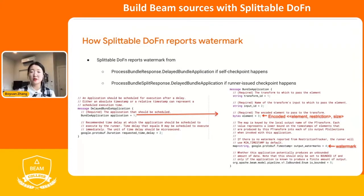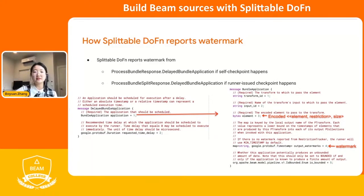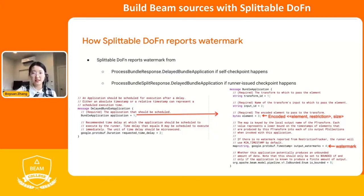After we report the watermark with the watermark estimator, how can the runner get the information? We report the watermark back in two ways. First, when self-checkpoint happens, we report the watermark together with the process bundle response. Or if the runner issues a streaming checkpoint, we return the watermark information together with the process bundle split response. They are all in the delayed bundle application field, which contains a map of the watermarks. Usually the runner looks into this field and gets the minimum timestamp of all current watermarks as the watermark.